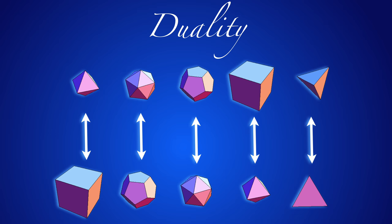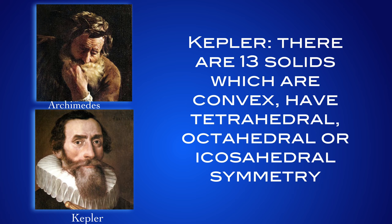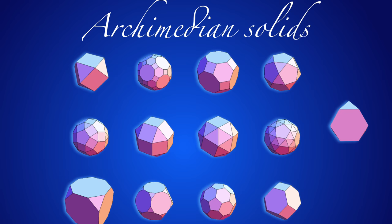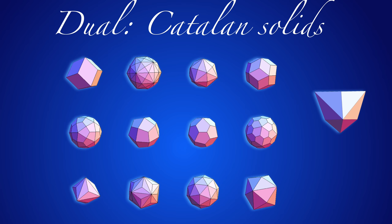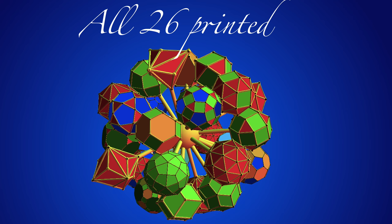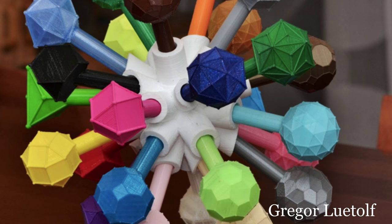Archimedes already looked at more general polyhedra. He found them, and Kepler proved that there are 13 of them. These solids are now called Archimedean polyhedra. Here they are. In the homework you will get acquainted with them a bit more. Here are the dual polyhedra — they are called the Catalan solids. You will also name them in the homework. Here is a computer rendering of a configuration where all 26 solids are combined. Gregor Lüthdolf, one of the pioneers in 3D printing in the classroom, has printed this one out.